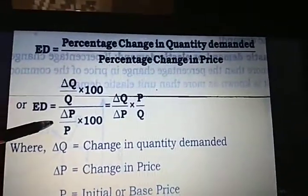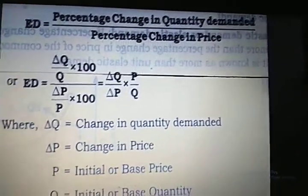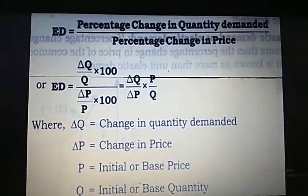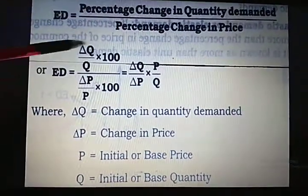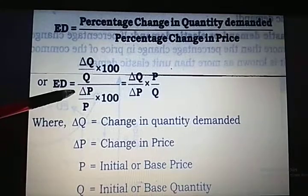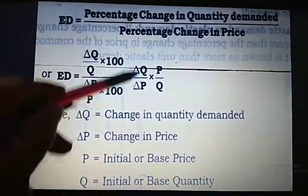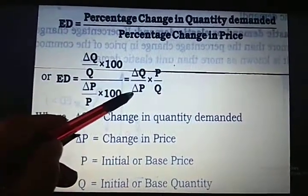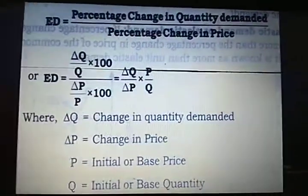Similarly, delta P is equal to P1 minus P. In the given question, new price was 6 and previous price was 5, so delta P is 1. Percentage change in quantity demanded is delta Q upon Q into 100, and percentage change in price is delta P upon P into 100. When the 100s cancel, we get delta Q upon delta P into P by Q, which is the formula for the proportionate method. Remember both formula 1 and formula 2.